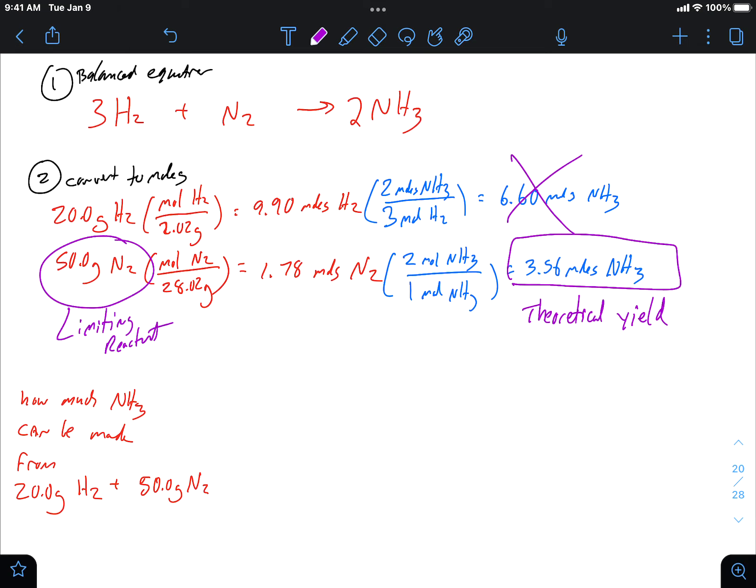The limiting reactant and the theoretical yield are both going to be from the same line of work. So if you figured out this one is lower, that means if you go to the beginning of this line of work, this is the amount that ran out. That's the limiting reactant. All right, so the last step then, to answer the question how much NH3, the theoretical yield is typically expressed in grams, so that means you have one more step. You convert. The mole of NH3 weighs 17.04 grams.